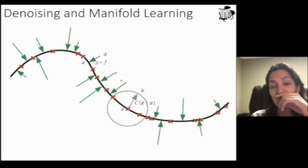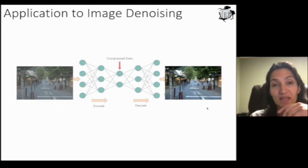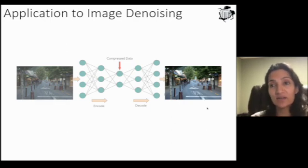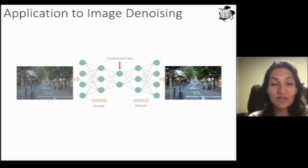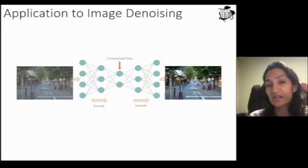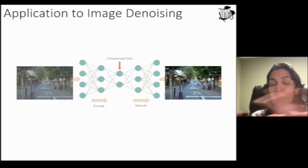One of the ways denoising auto-encoders have been used is to denoise images. So if you take this really blurry image, which is an image with noise added to it, the denoising auto-encoder can be trained to clarify it. And this works with a wide variety of noise types.